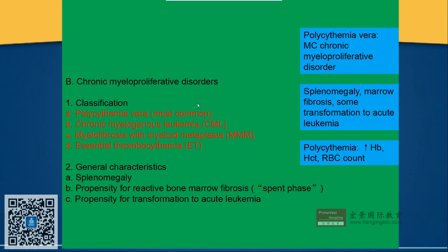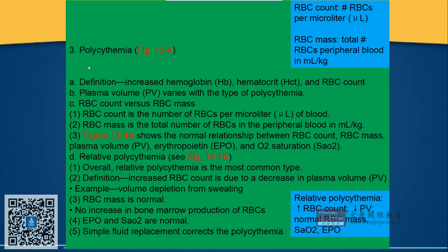Here are some tricky points. Because all four diseases are included in the myeloproliferative disorders, you need to know how to differentiate between the four in terms of hemoglobin, hematocrit, and RBC count. First of all, polycythemia — what does it mean? As long as there is increased hemoglobin, hematocrit, and RBC count, we call it polycythemia.